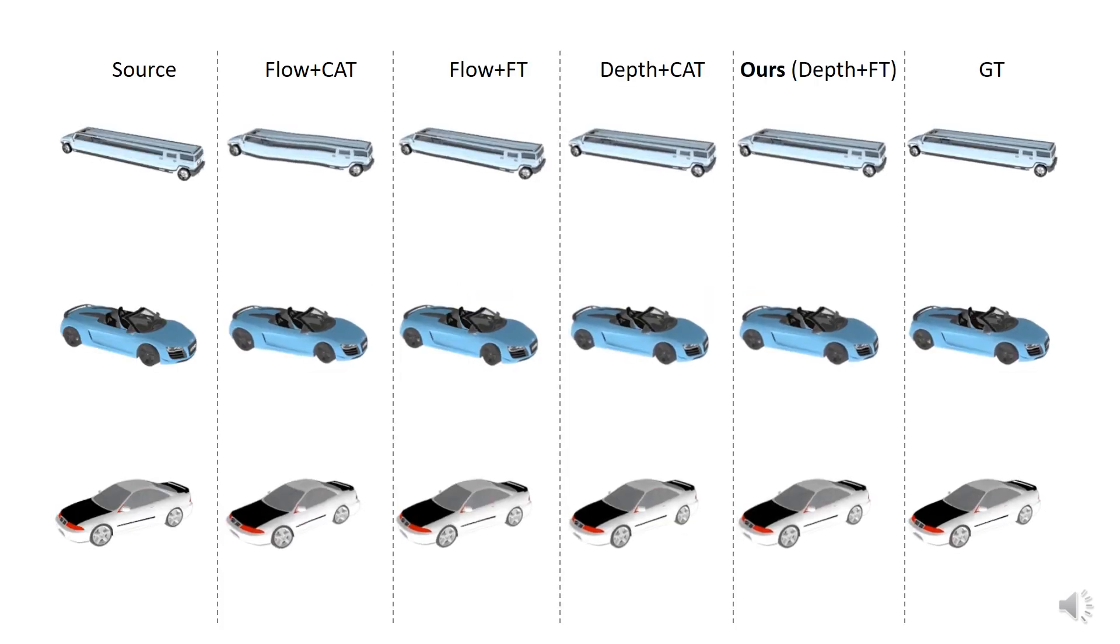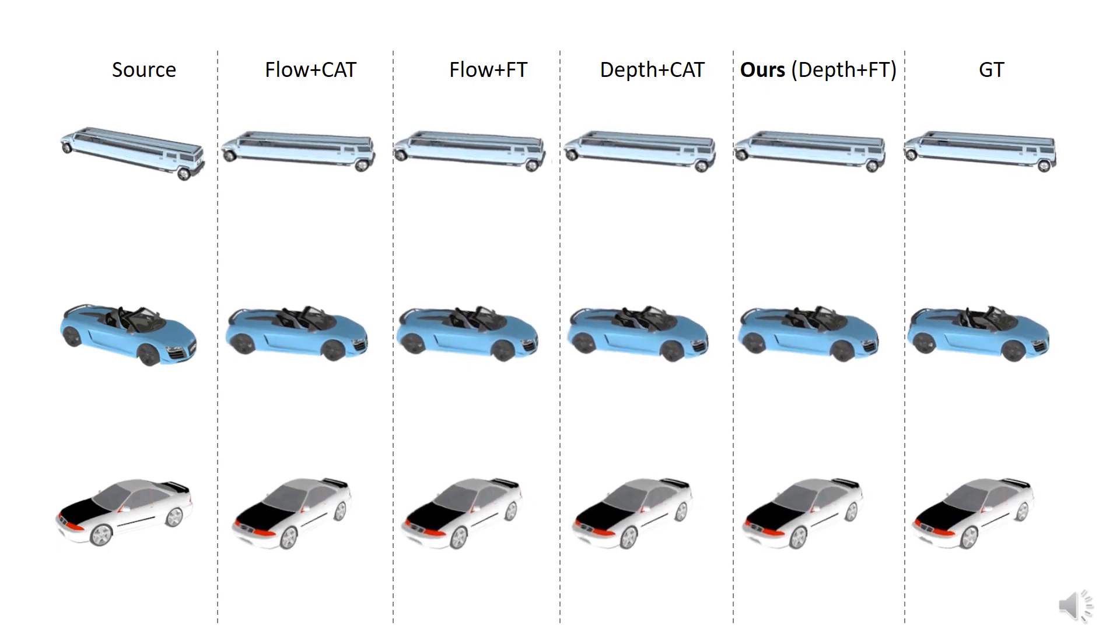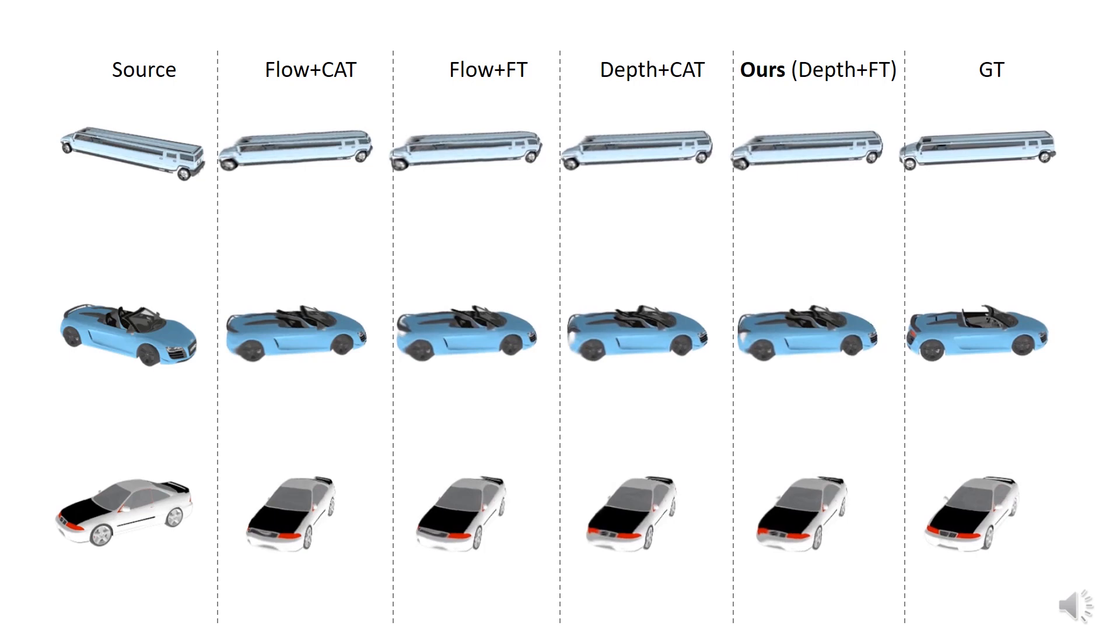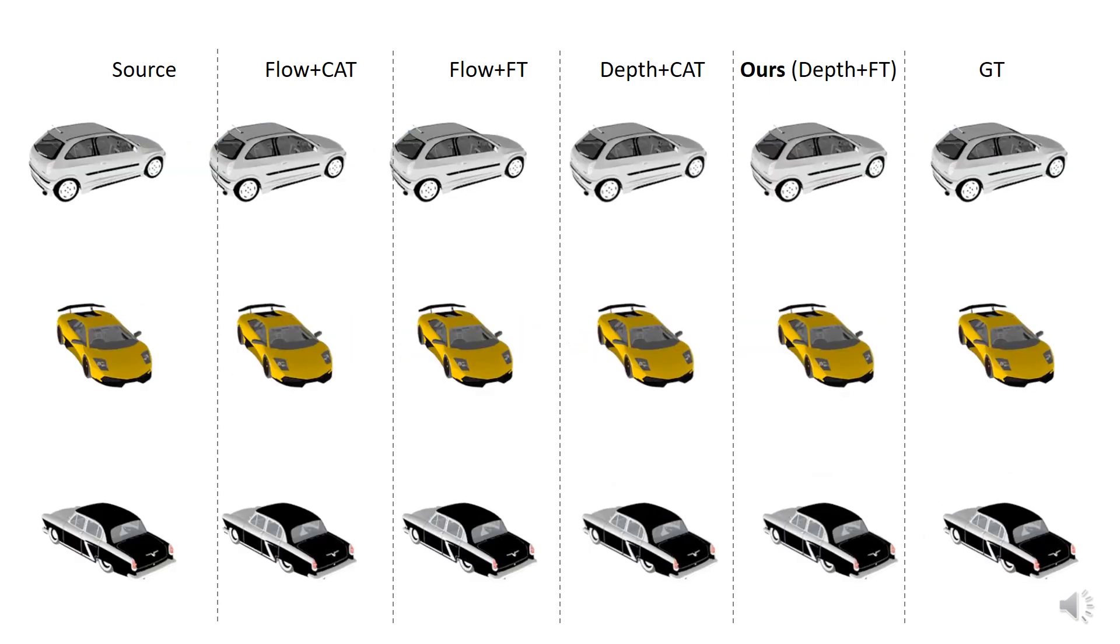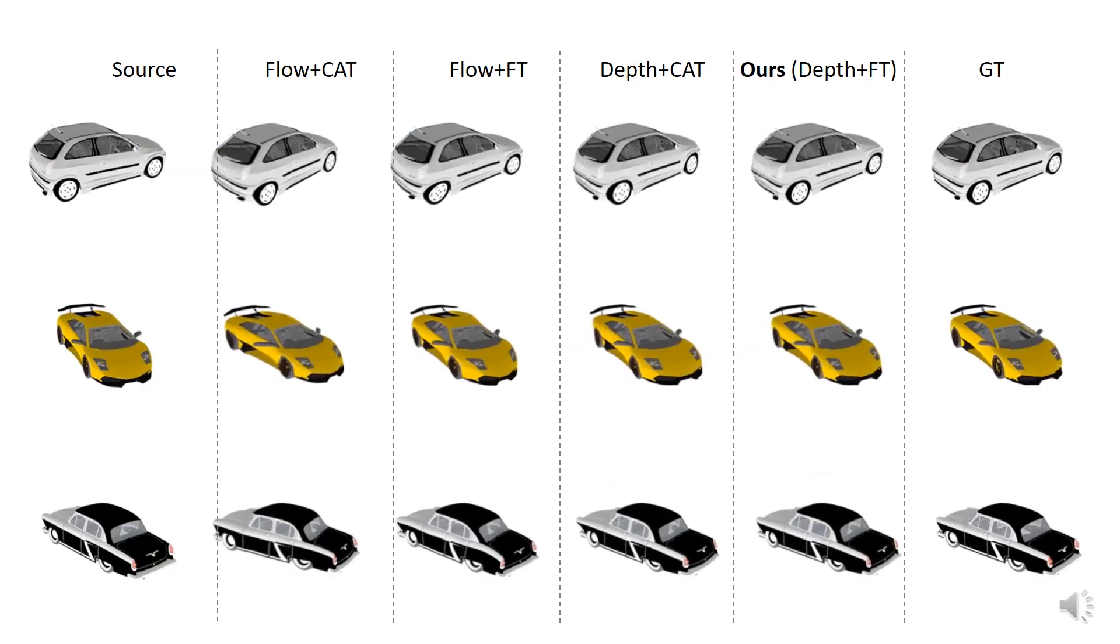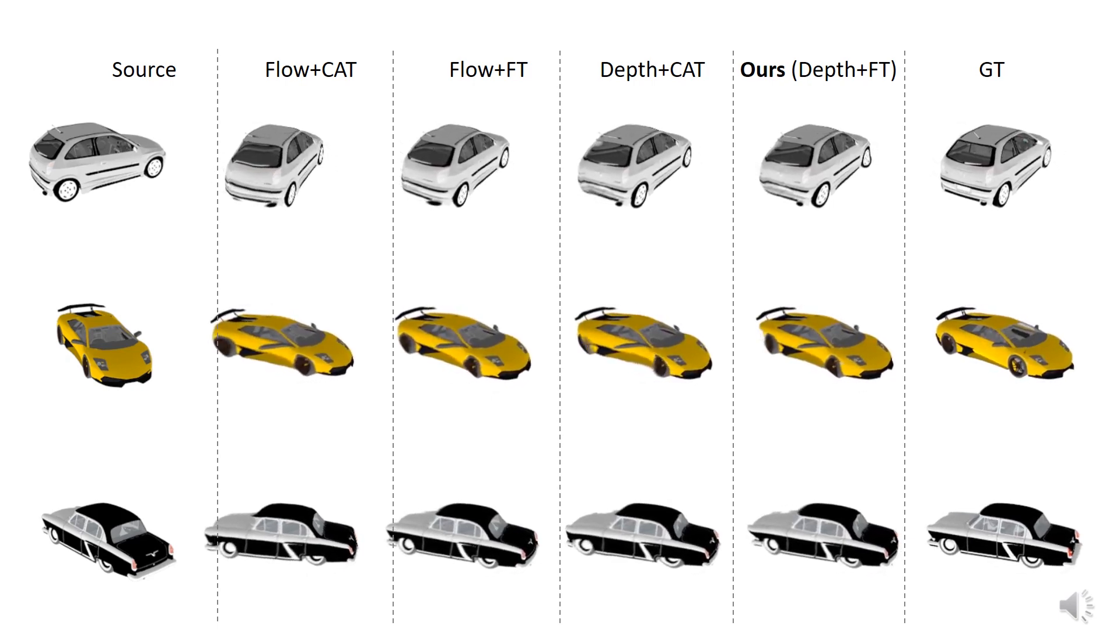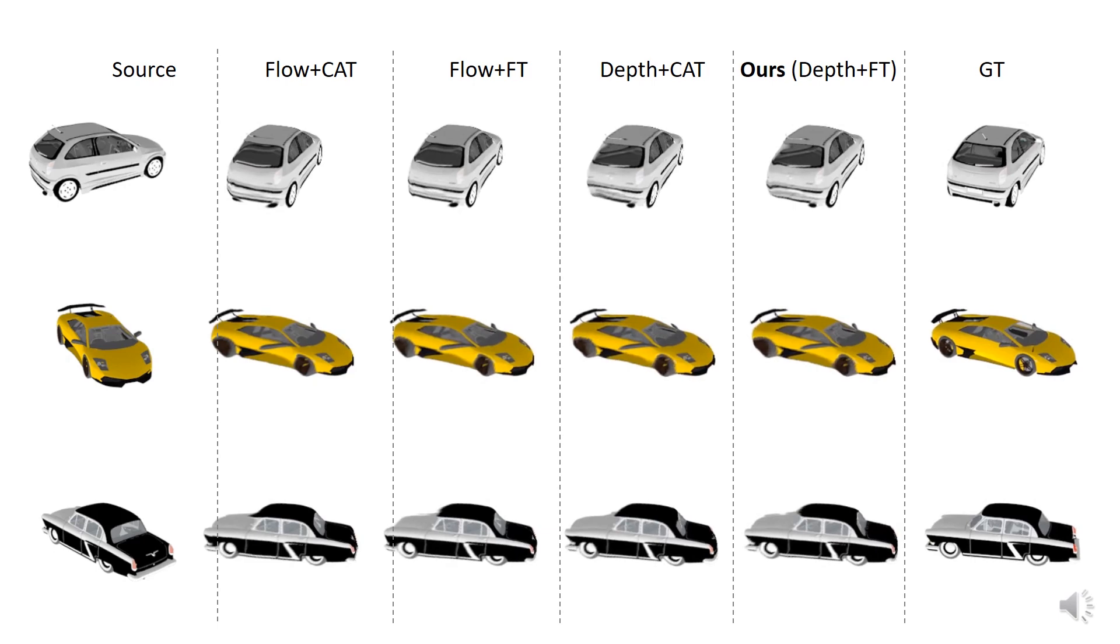Here we compare with methods based on latent code concatenation and direct flow map prediction. While other methods struggle to faithfully reconstruct fine-grained viewpoint manipulations and converge to viewpoints seen at training time, our method exhibits similar smooth motion compared to the ground truth, shown on the right.